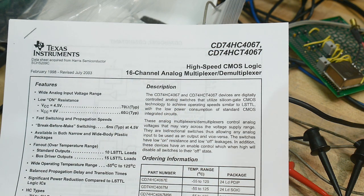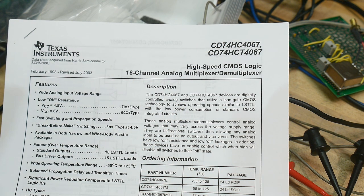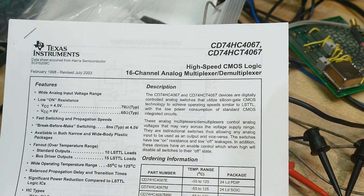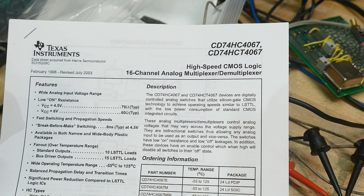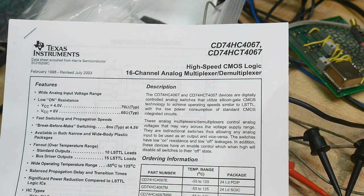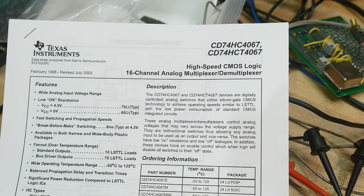This one's going to be a 74HC4067, and that part number might look familiar. We talked about a 4066. A 4066 is an analog switch. Well, if you can build an analog switch, what if you put a whole bunch of analog switches in one package and make it into a multiplexer?